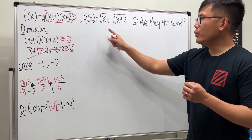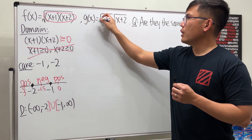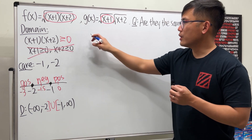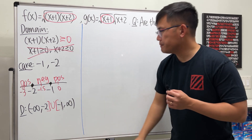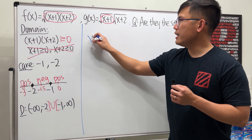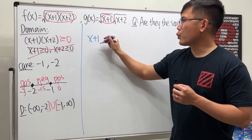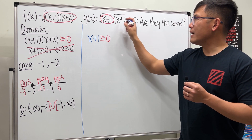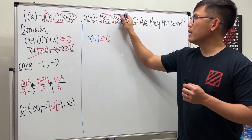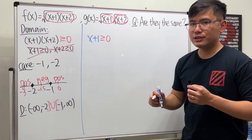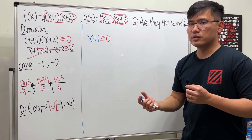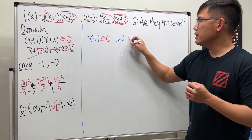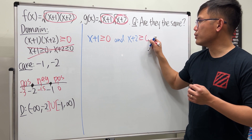Now for g(x), be really careful. We have two square roots. First, we need x+1 ≥ 0. But we also have x+2 inside another square root — the keyword is 'another square root' — so we also need x+2 ≥ 0. These are two separate conditions that must both be satisfied.